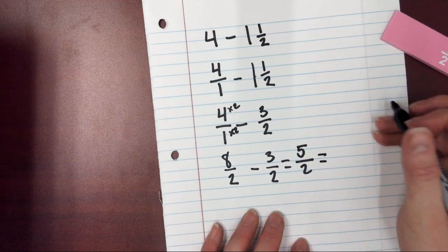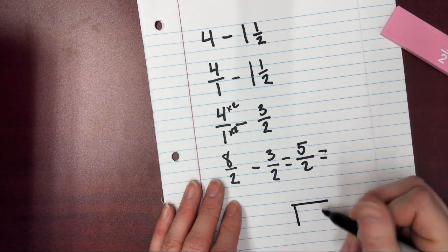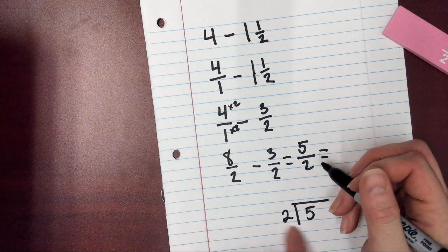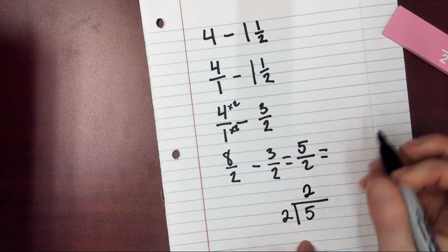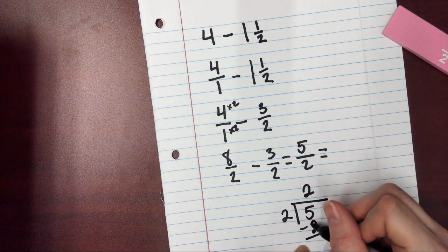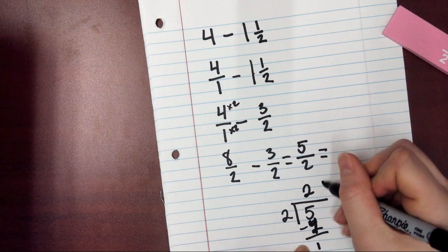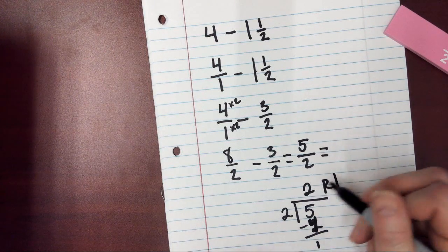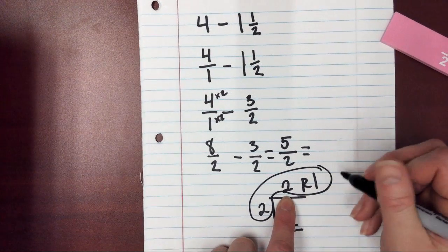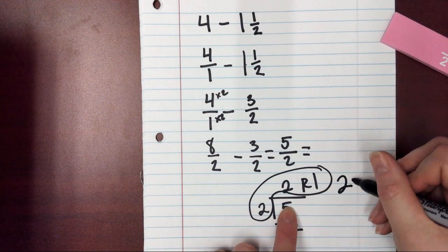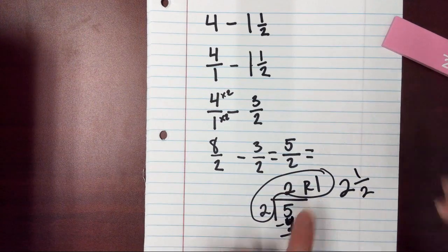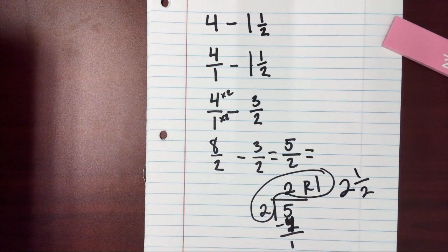And then to turn that into a mixed number, I'm just going to take my numerator, put it under the box. My denominator goes outside the box. 5 goes into 2 2 times minus 2, I'm sorry, 4, is equal to 1. 1 becomes my remainder. And then this right here is my fraction. My quotient becomes my big number. Bottom stays the same, just like it is up here. And my numerator is my 1 half.